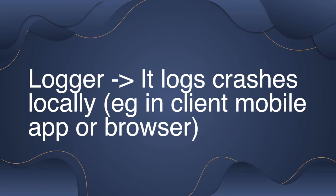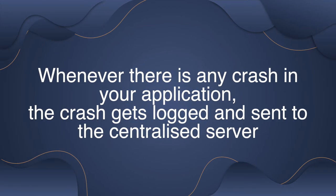We also need a dashboard where we can monitor crashes. A logger system logs crashes locally — in the client mobile app, mobile browser, or client browser — meaning the server side cannot know there is a crash. A logger system is more suitable for development environments, while a crash reporting tool is more helpful in production environments. In production, whenever there is a crash in your application, the crash gets logged and sent to a centralized server.